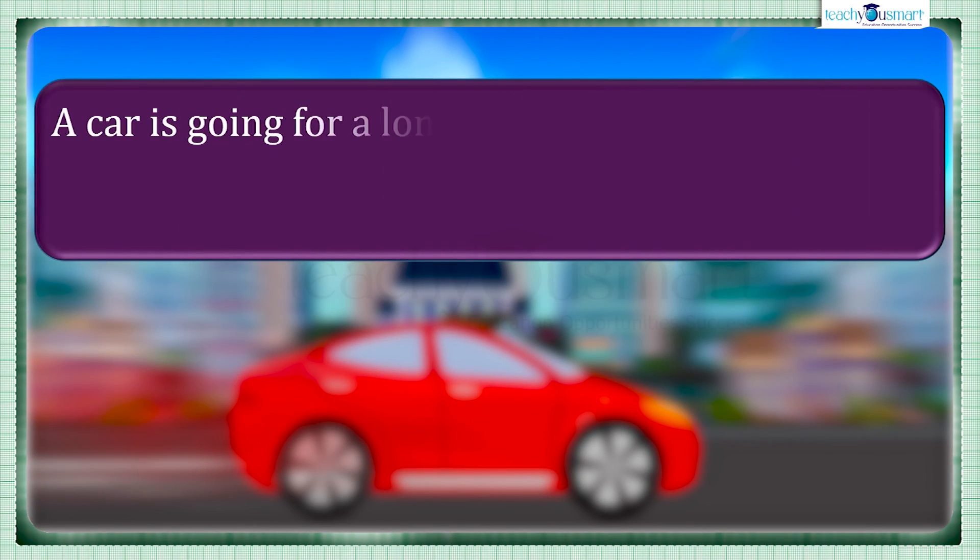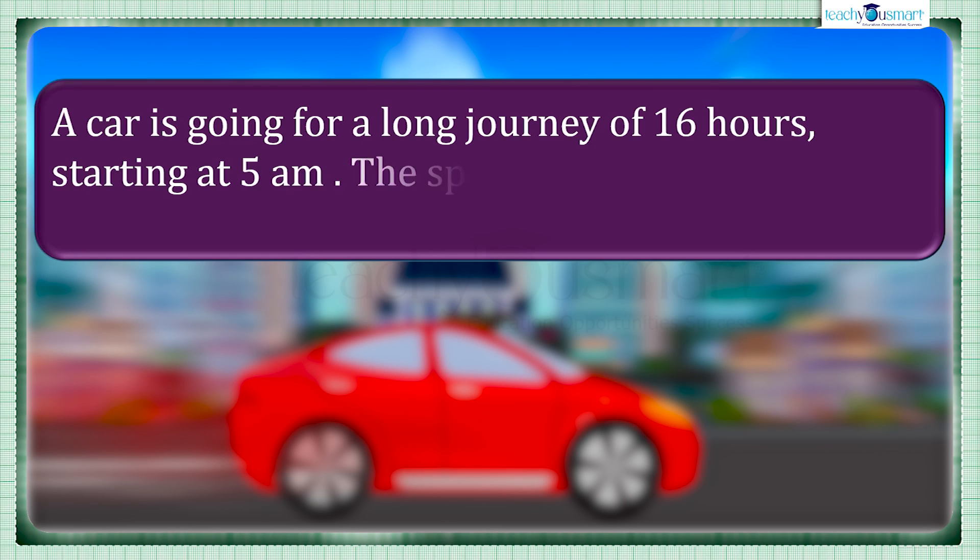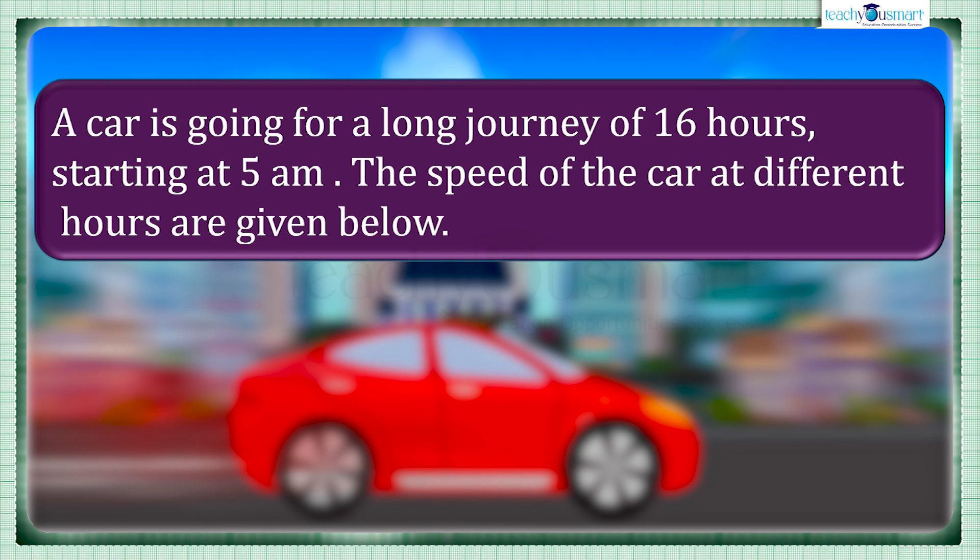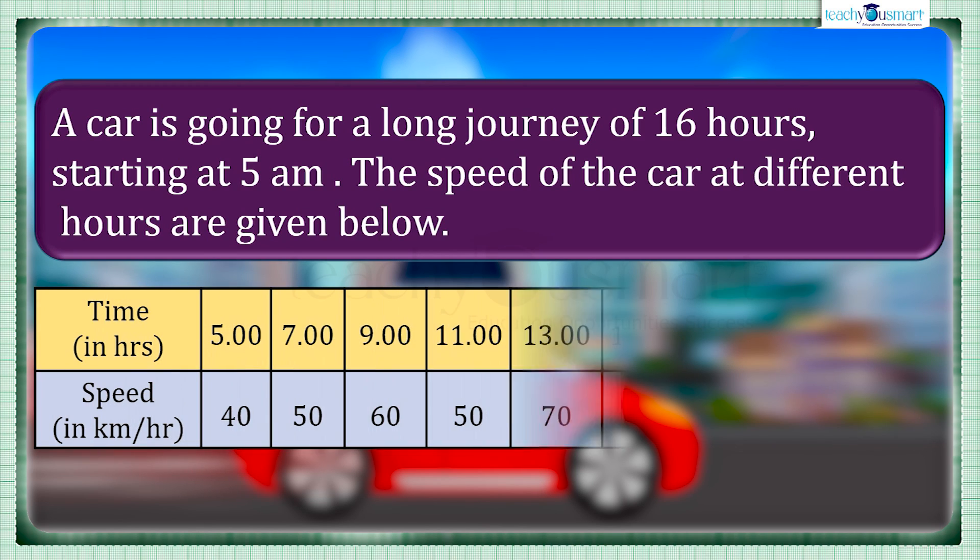Before winding up, let's check how much you understood by doing an activity. A car is going for a long journey of 16 hours, starting at 5 AM. The speed of the car at different hours are given below. Draw a graph for the given data.